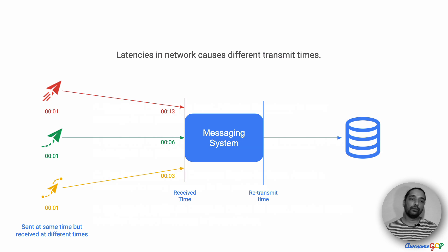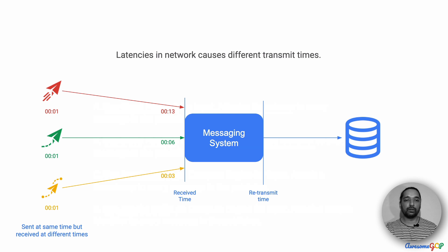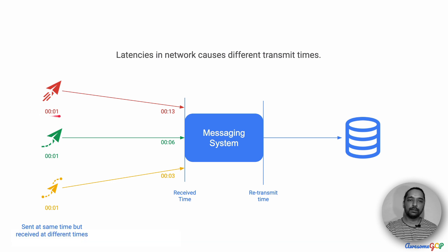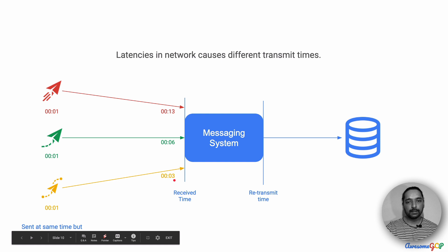In this case, we have the red message, green message, and yellow message all being sent at the same time. However, by the time we receive them, they arrive in the reverse order. The red message sent at second 01 reaches at second 13, the green message sent at the same time reaches at second 6, and the yellow message reaches first at second 3.